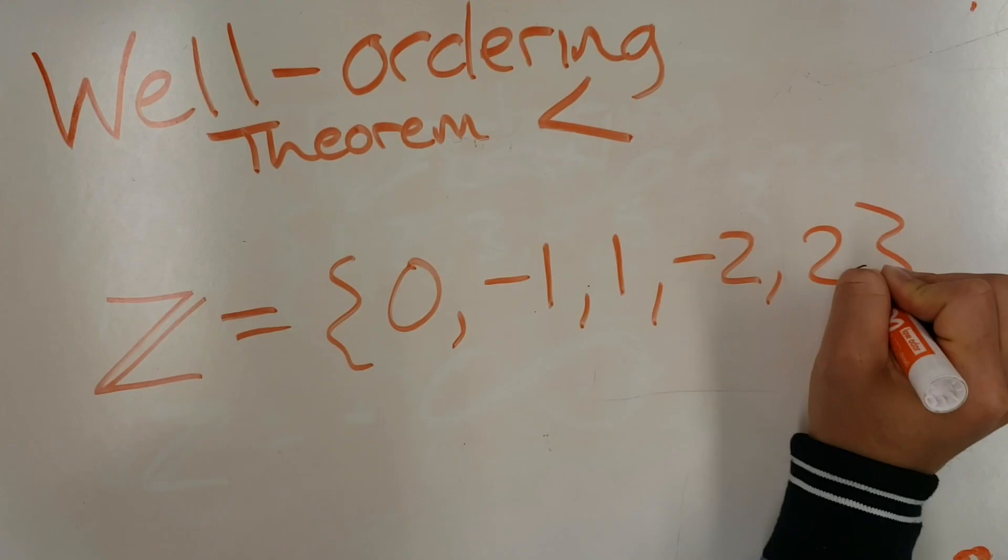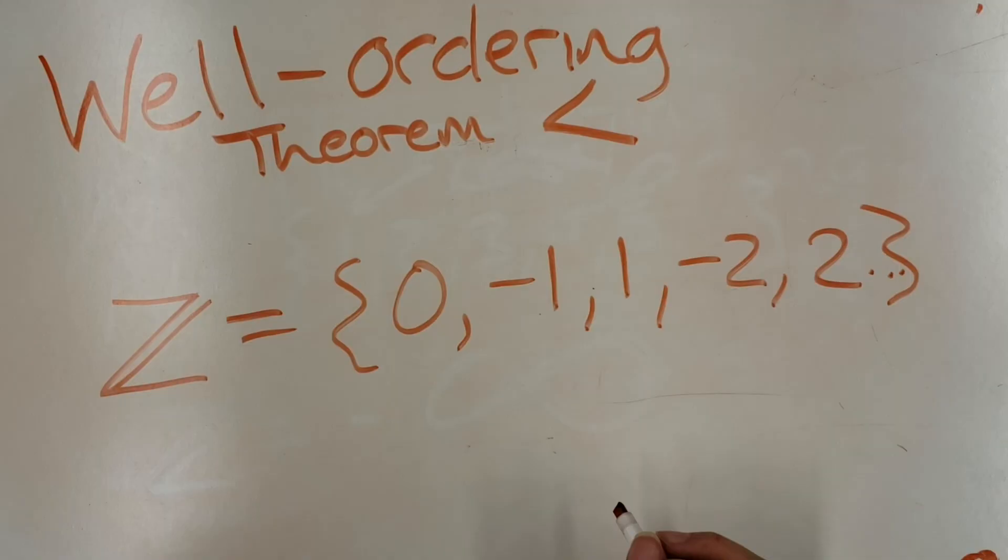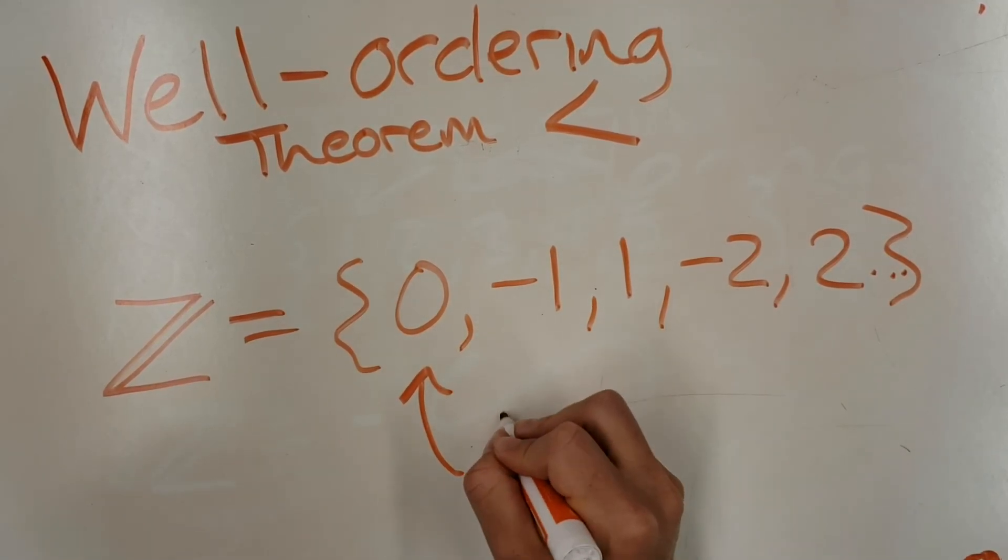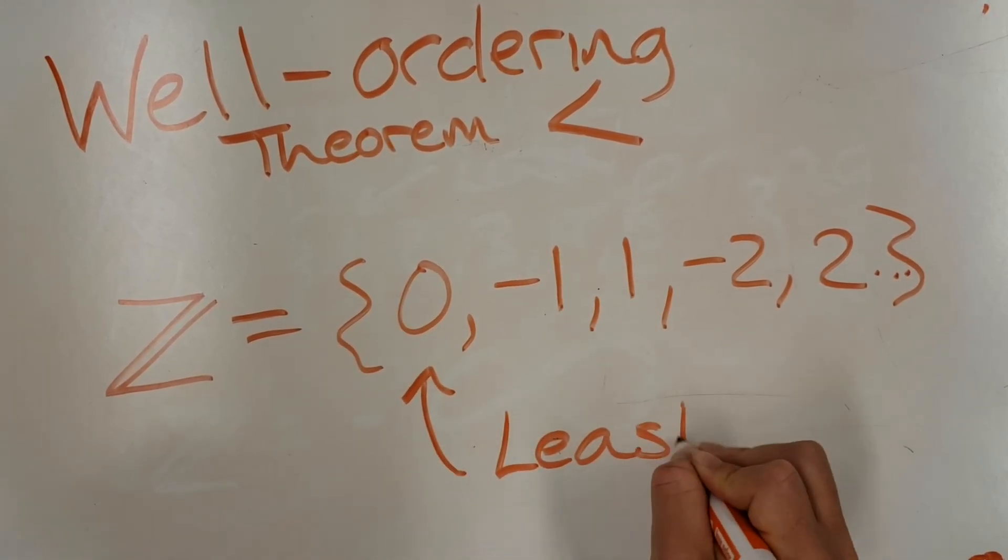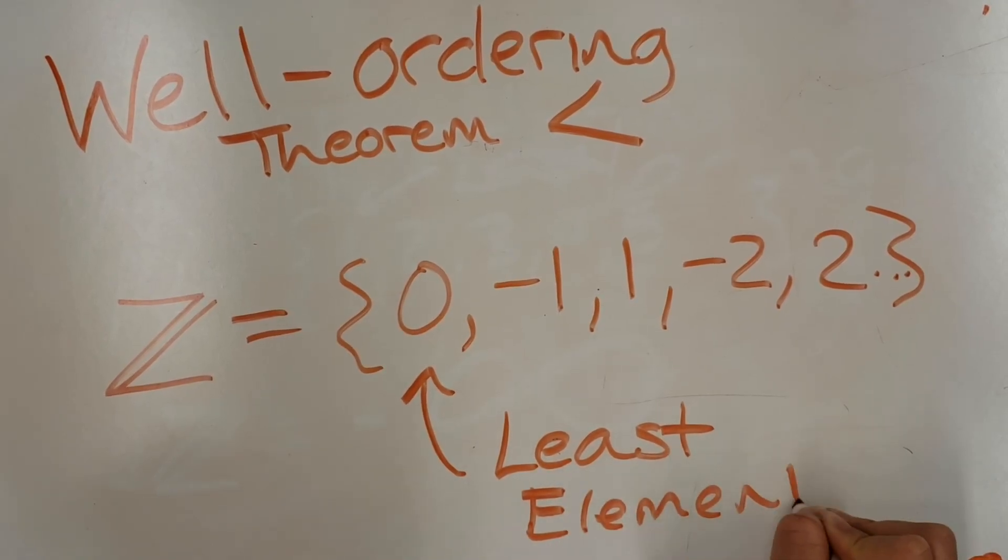This is well-ordered because we know that the least element by this comparison system is zero. This can similarly, although in a slightly more complicated way, be extended to the rational numbers Q, but we will leave that to you as an exercise.